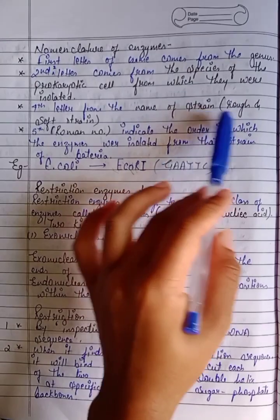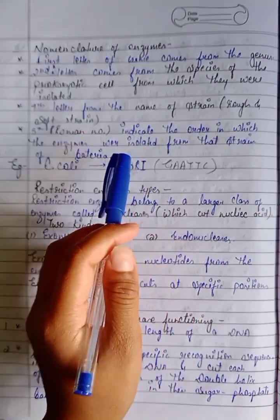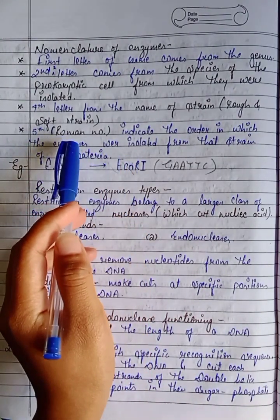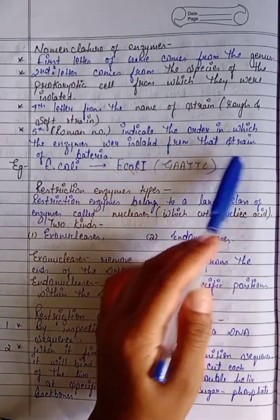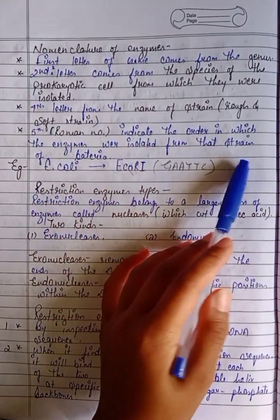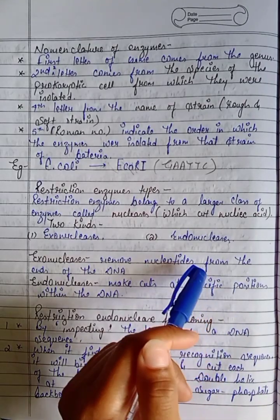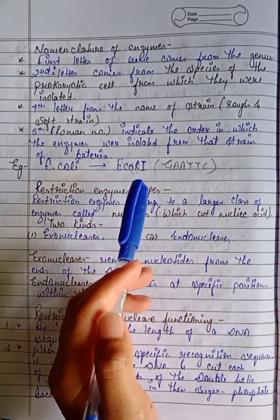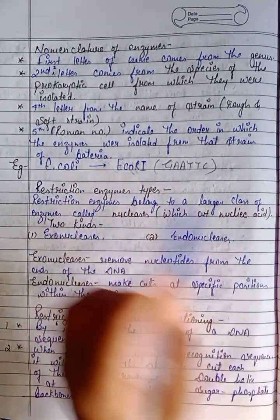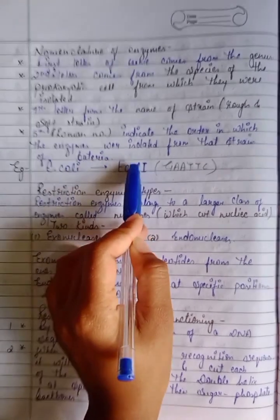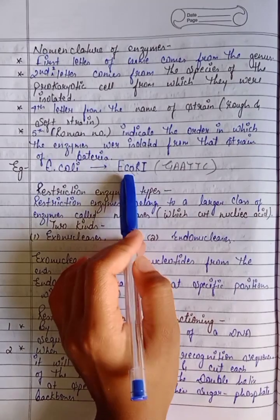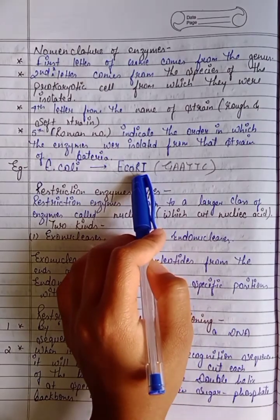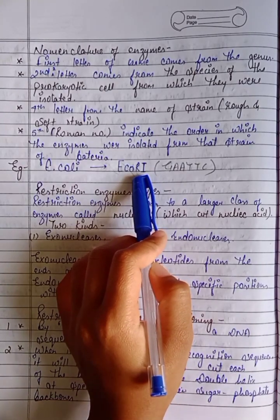In enzyme nomenclature, the fourth letter comes from the name of the strain — rough or smooth strain. The fifth part is a Roman numeral indicating the order in which the enzyme was isolated from that strain of bacteria. For example, in EcoRI: 'E' comes from the genus Escherichia, 'co' from the species coli, 'R' is the name of the strain, and 'I' is Roman numeral one indicating the order of isolation.